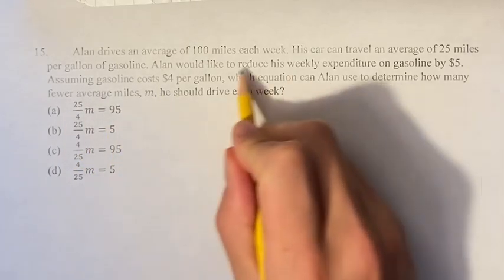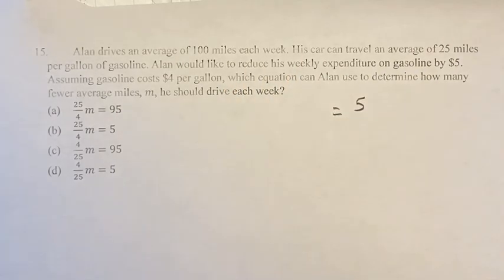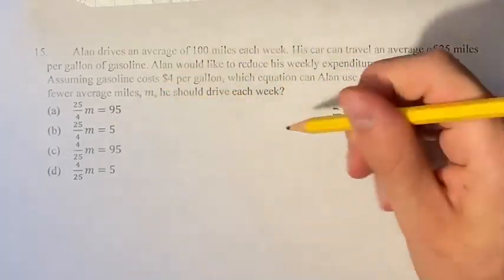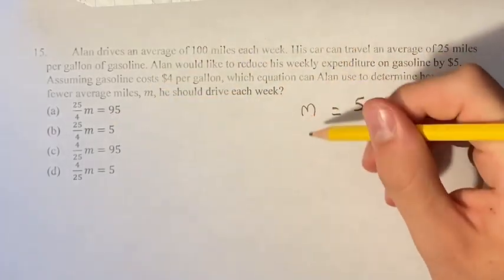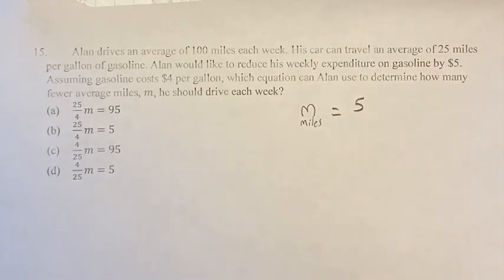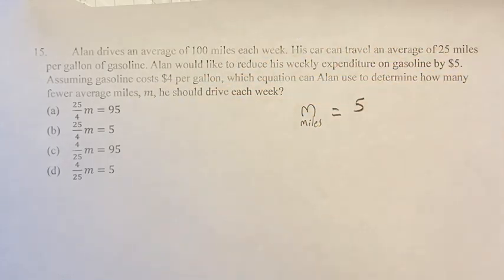So the total reduction he wants is $5. So $5 is going to be equal to, and then we want to get M miles in terms of dollars. And we can use this by converting using the dollars per gallon and the miles per gallon.